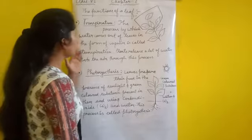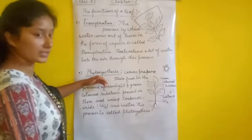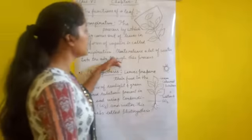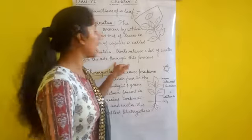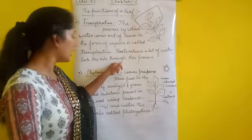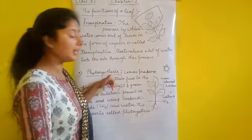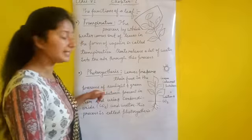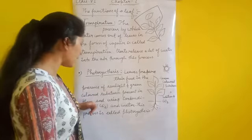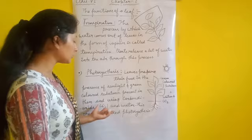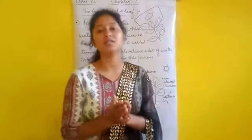So these are two functions of a leaf: transpiration and photosynthesis. Transpiration is the process in which plants release water into the air. And photosynthesis is the process where leaves prepare their food in the presence of sunlight and a green colored substance, using carbon dioxide and water.